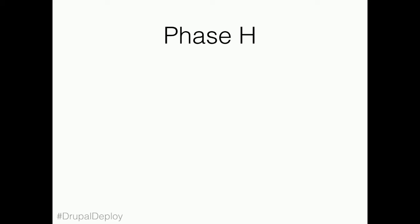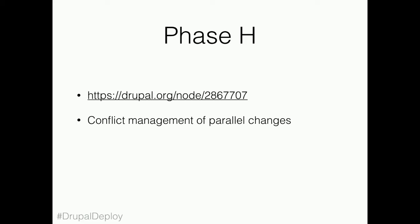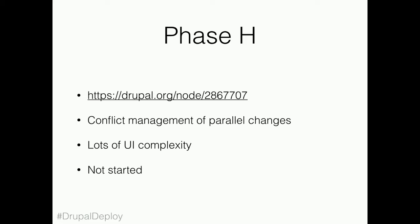The very last phase, phase H, we're going to deal with conflict management of parallel changes. When we introduce all of these moderation capabilities, we enable editors to be very productive. That also means that they will start stepping on each other's toes if we have multiple workspaces — perhaps branches of content changes being done. We need to empower content editors to collaborate and solve conflict. That's a big phase with lots of UI complexity. We haven't started coding on any of this yet.